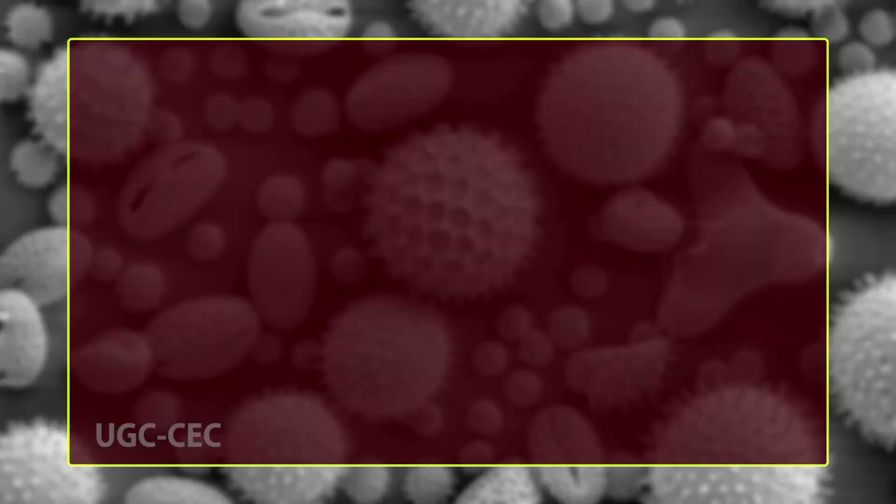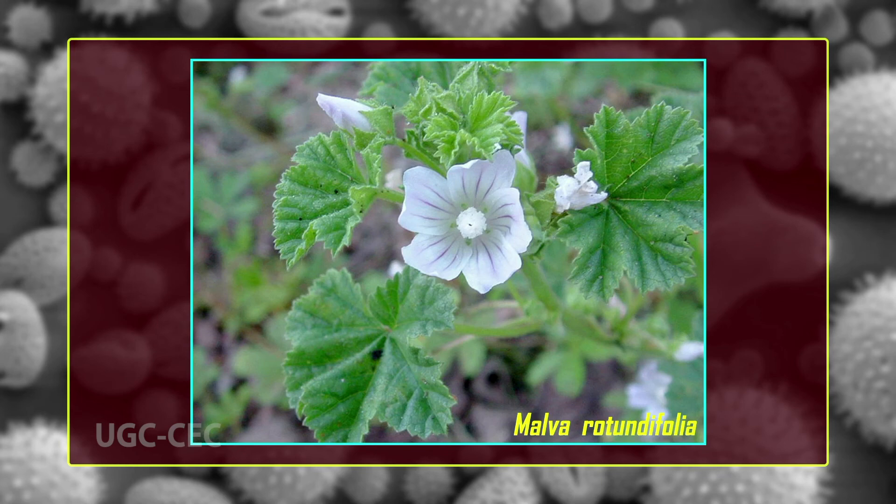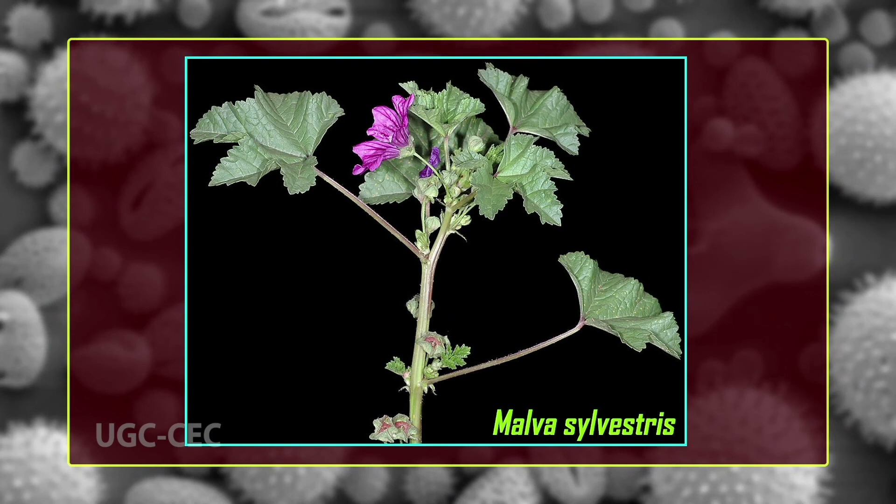Salix has long and narrow three-furrowed pollen grains, while Populus has spherical pollen without distinct apertures. Pollen size is helpful in distinguishing two species of genus Malva: Malva rotundifolia with pollen size 74 to 84 micrometers, and Malva sylvestris with pollen size 105 to 126 micrometers.